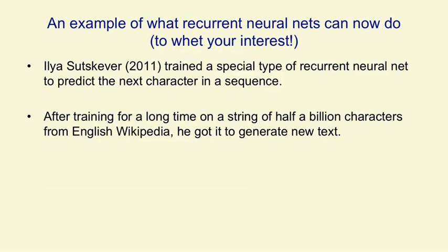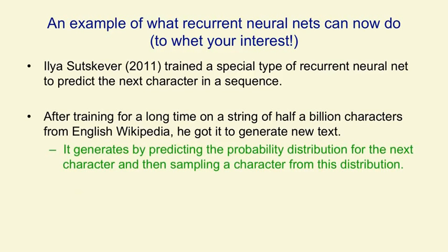Another way of seeing what it can do is to get it to generate text. What you do is give it a string of characters and get it to predict probabilities for the next character, then you pick the next character from that probability distribution. It's no use picking the most likely character — if you do that, after a while it starts saying 'the United States of the United States of the United States.' But if you pick from the probability distribution, so if it says there's a 1 in 100 chance it was a Z, you pick a Z one time in 100, then you see much more about what it's learned.